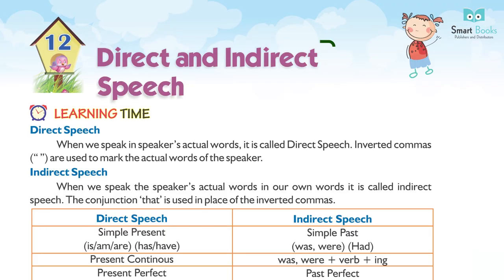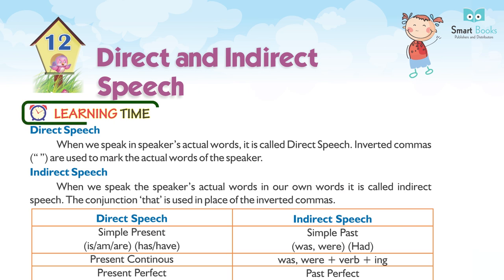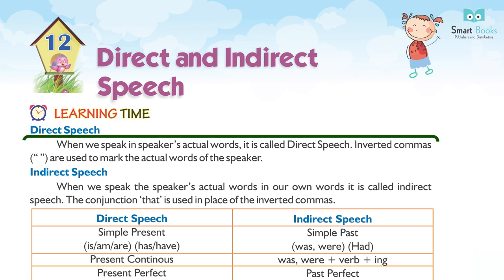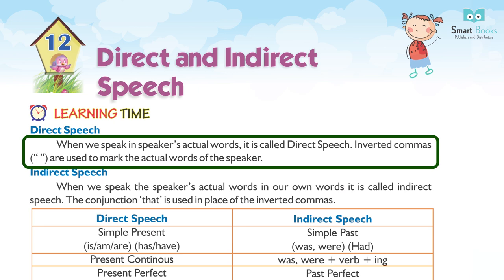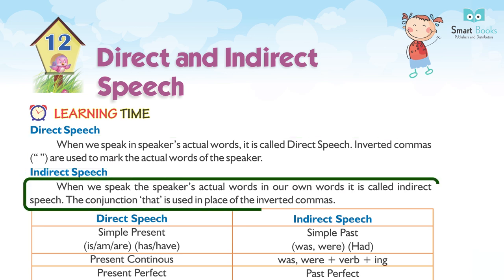Chapter 12: Direct and Indirect Speech. When we speak in the speaker's actual words, it is called direct speech. Inverted commas are used to mark the actual words of the speaker. When we speak the speaker's actual words in our own words, it is called indirect speech. The conjunction 'that' is used in place of the inverted commas.